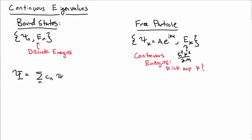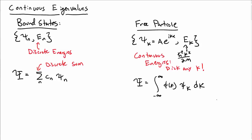In the bound state discrete case, you could expand a wavefunction as a sum over the discrete eigenstates — a discrete sum over integer n. For continuous energies, you turn that discrete sum into a continuous integral, where now you have a function of coefficients which depend on k, so we've turned the sum into an integral.